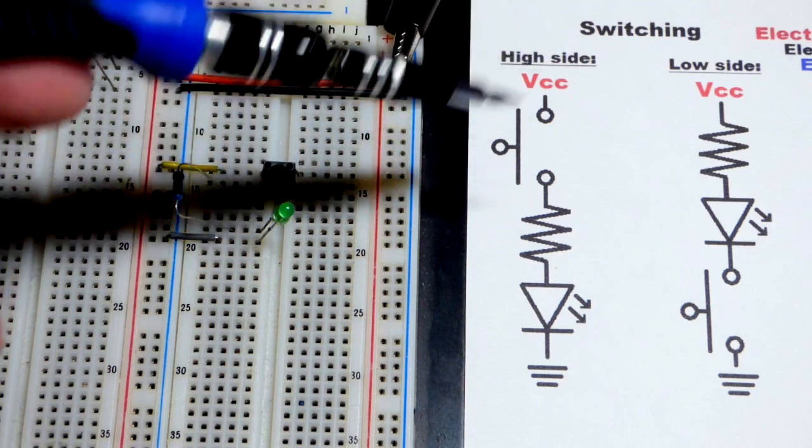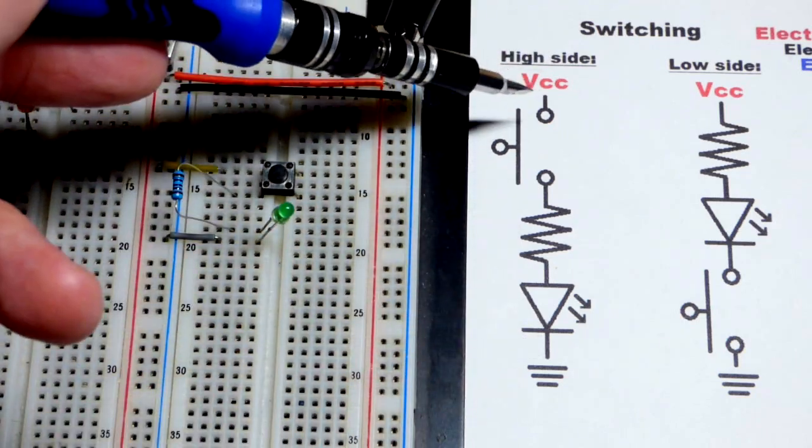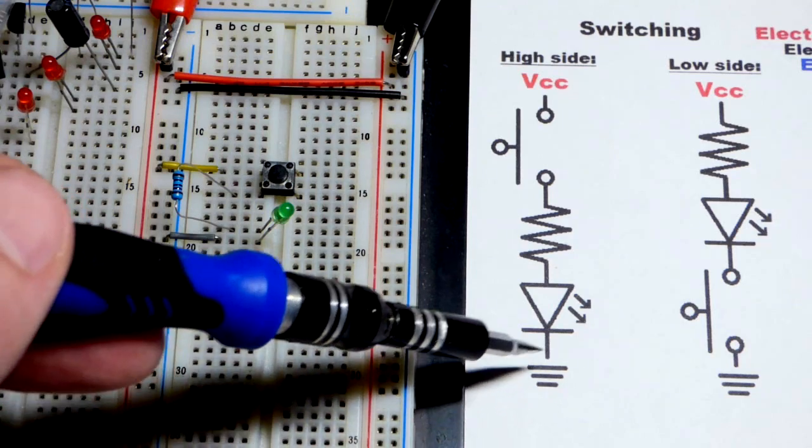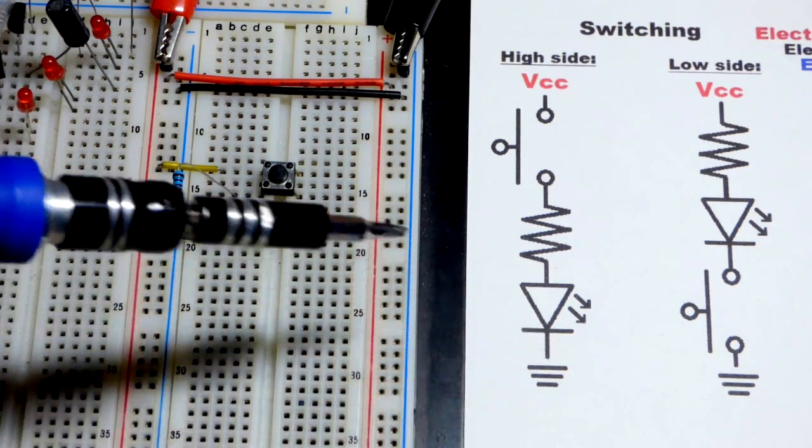The switch is the high side because that's more positive. In this case it's going to be 5 volts and ground is going to be 0 volts and there's no voltage below ground. There's no negative voltage.